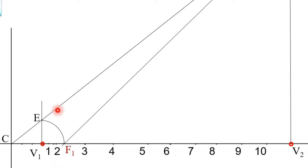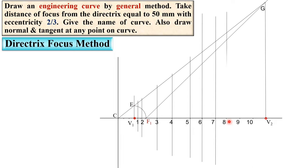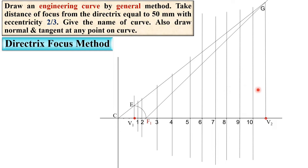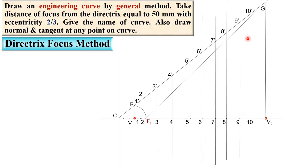Draw vertical lines passing through all the division points. Use the ruler scale to ensure they are exactly vertical, parallel to the directrix. Give the names: 1 dash corresponding to point 1, and similarly 2 dash, 3 dash, 4 dash, 5 dash, 6 dash, 7 dash, up to 10 dash.